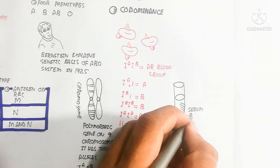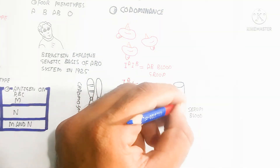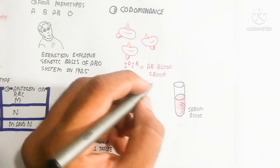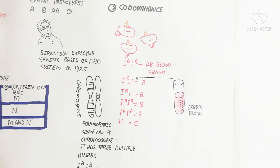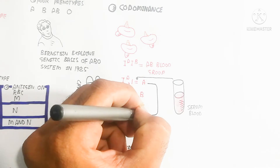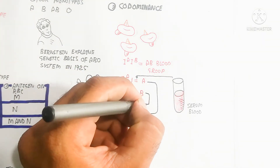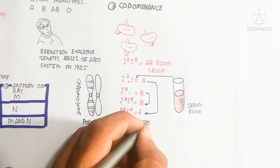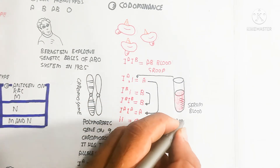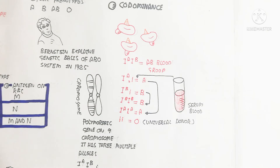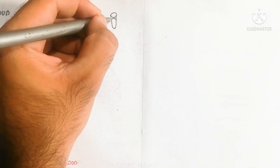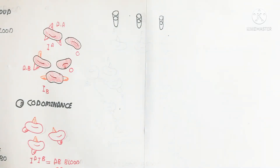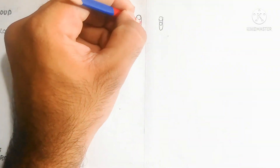We can transfuse A blood to A, and B blood to B, but we cannot introduce A to O. That means O is the universal donor. Why? Because it contains nothing — no antigens are present on the surface of the O blood group system — so we can donate to everyone.